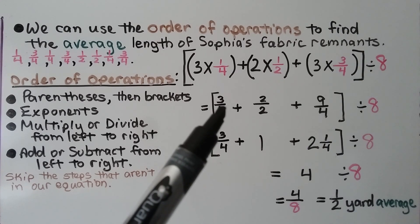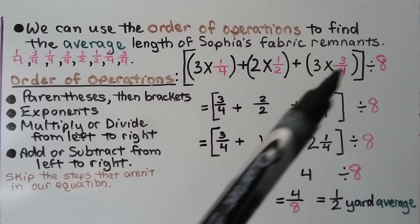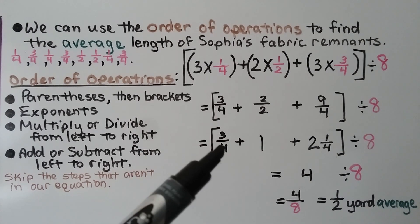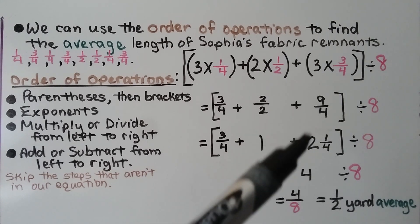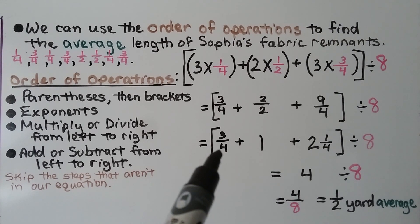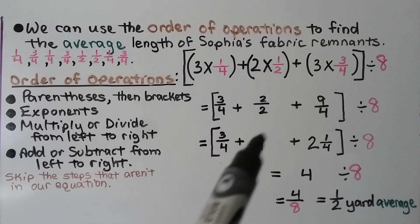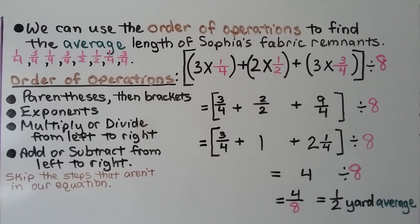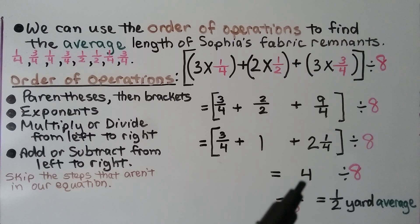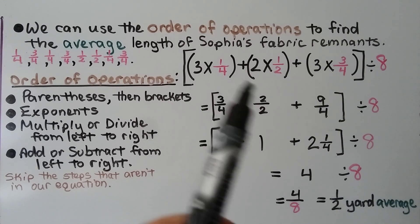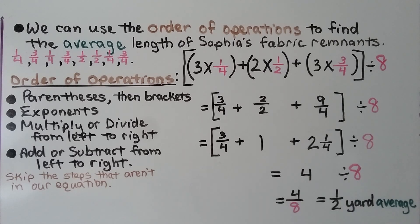Three times one-fourth is three-fourths. Two times one-half is two-halves, which is one whole. And three times three-fourths is nine-fourths, which is two and one-fourth. We see that three-fourths and one-fourth can be added together to make one, then another one makes two, and two more makes four whole. Now we have four divided by eight. Since fractions are division, we write four-eighths, which equals one-half yard average. We do what's in the parentheses first, then the brackets for the addition, then divide by eight.